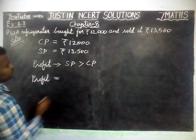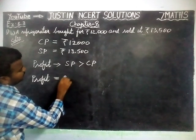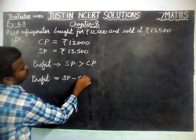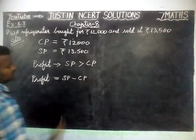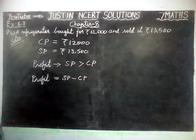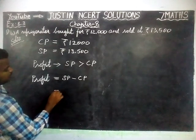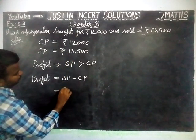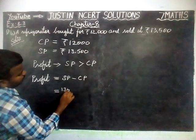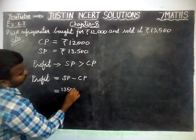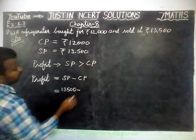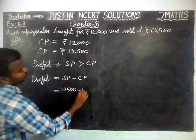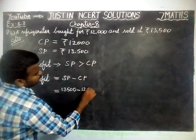Profit is equal to sale price minus cost price. Here sale price is equal to Rs. 13,500 minus cost price is equal to Rs. 12,000.